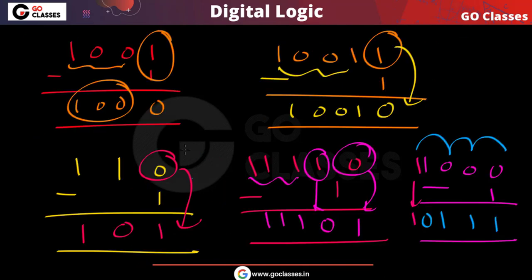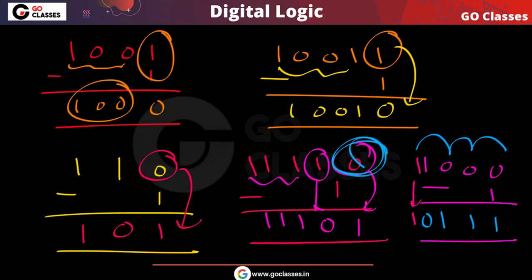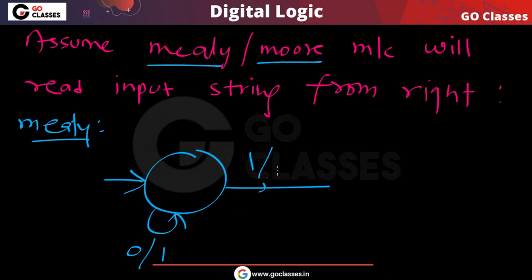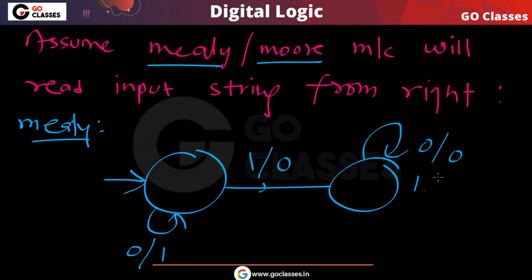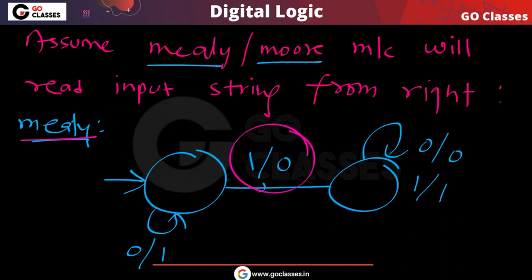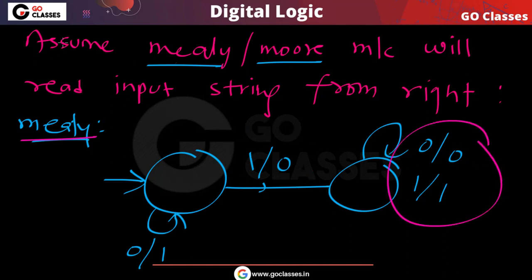If 0s are coming, you make them 1. The first 1 that comes, you make it 0, and everything remaining is the same — 0 stays 0, 1 stays 1. So this is your Mealy machine, very simple. This is how you create a Mealy machine for decrementing a number by 1.